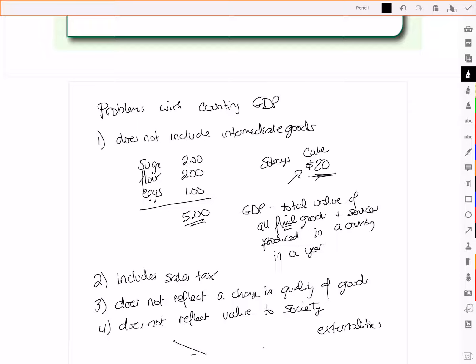Externalities are when you impact someone who's not the buyer or the seller. So for example, let's suppose you make paper, and your paper, you sell it for 10 cents a sheet. Well, that 10 cents is based on the cost to make it and the value to the person who's buying it.